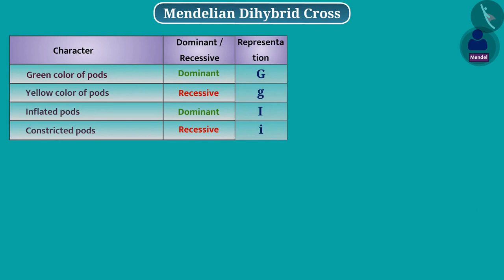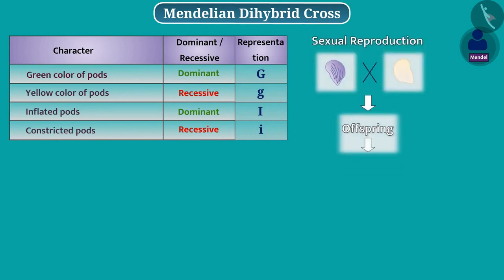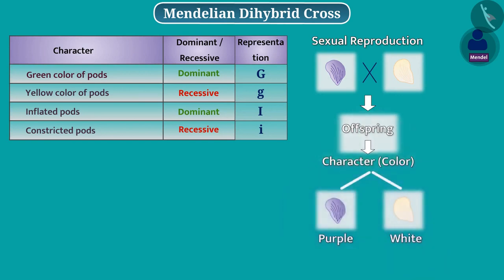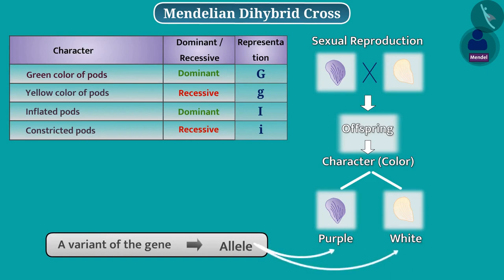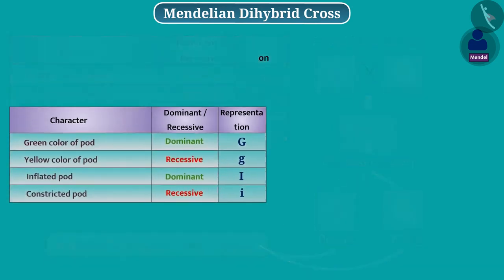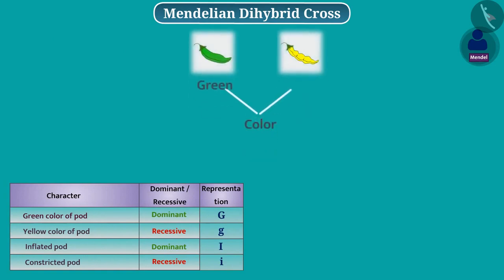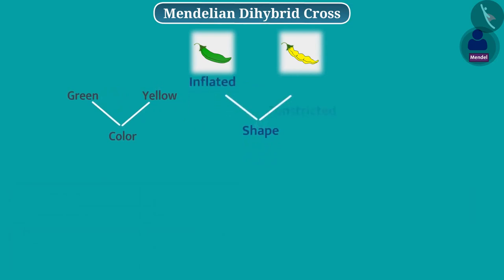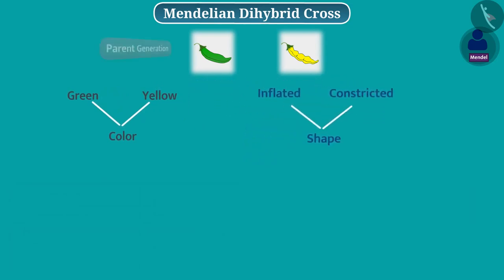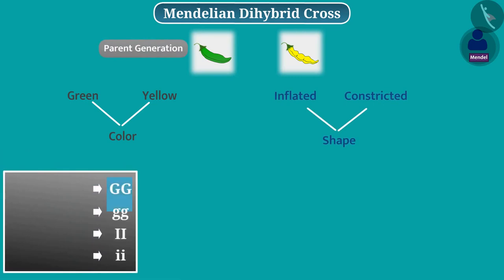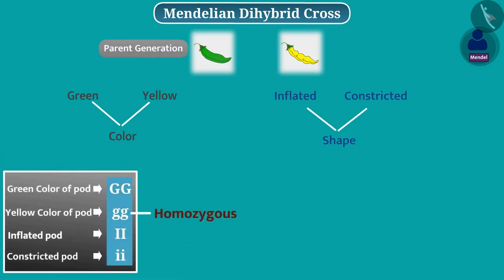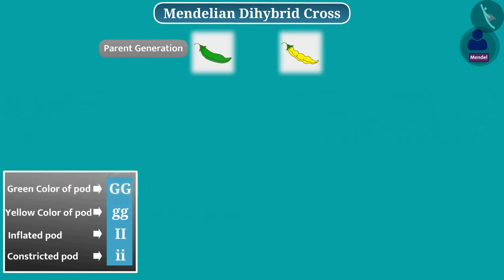Offspring produced by sexual reproduction has two options for each trait. A variant of the gene is called allele. For example, here there are two forms of pod colour — green and yellow — and two forms of pod shape — inflated and constricted. Parents of F1 generation are homozygous for colour and shape of the pod, so they have the same allele for a character.